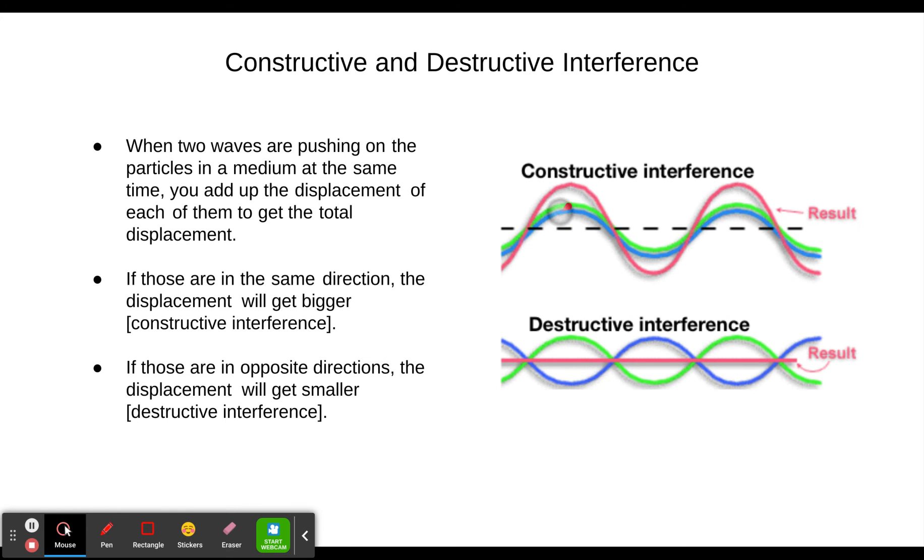Here we see the blue and the green waves are both at the same place at the same time. So instead of the medium being here, it would go one plus one, and it would be up here at two. Same thing with destructive. If we see one pushing down and one pushing up, positive one and negative one cancel out. And so we get destructive interference.